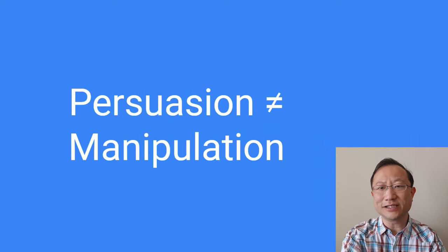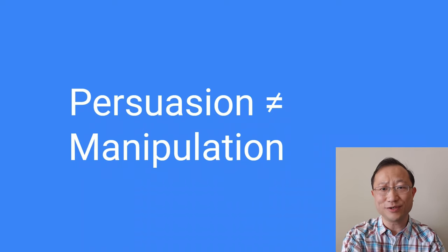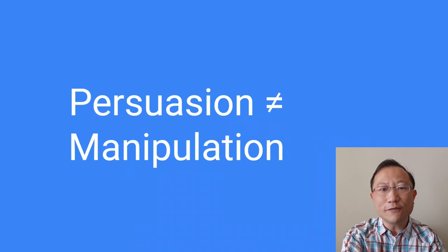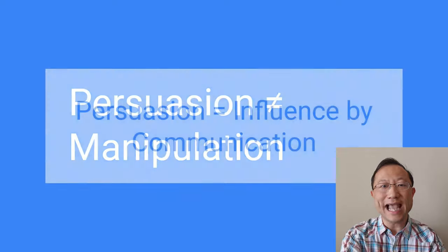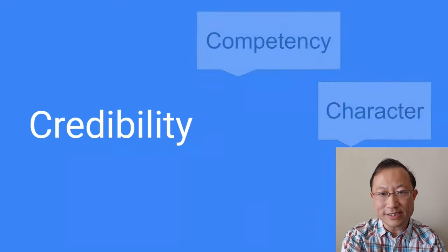However, persuasion sometimes got a bad name. Some equate persuasion to manipulation. Like a bad salesperson tries to persuade the customer by giving less than truthful information. But those are bad persuasion. A good leader persuade by giving truthful information and skillful communication. Persuasion is actually influence achieved by good communication. Now, how do we do that? A good leader starts not with communication skills, but with credibility. A good leader builds up his credibility. When the leader is trusted by the people, it will be easy to persuade them.